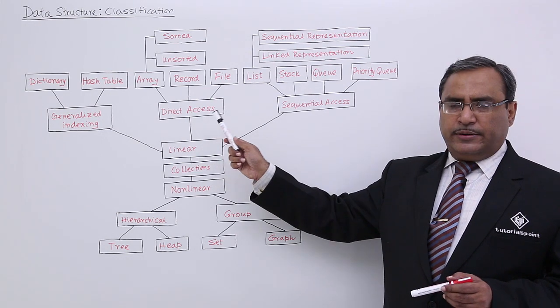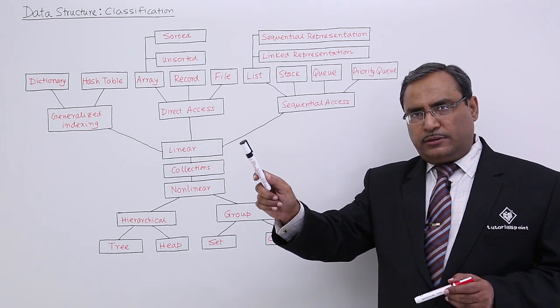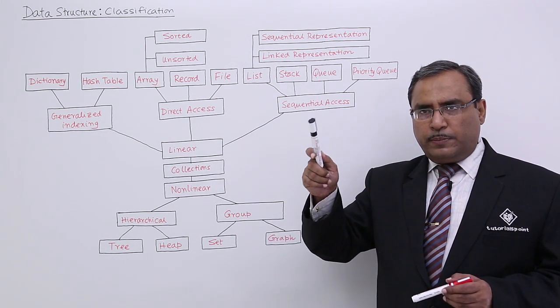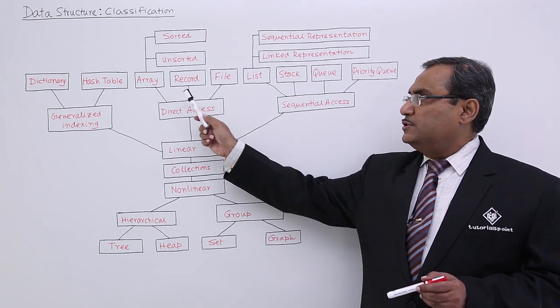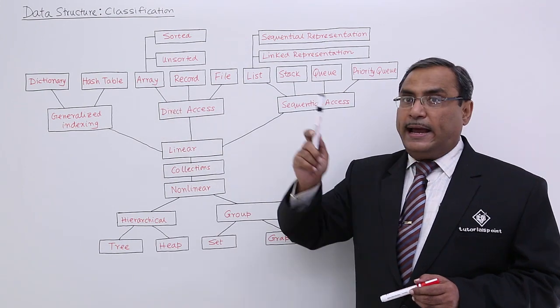In case of direct access, you can directly access a certain location. You need not go sequentially one by one. That means that sort of data structure will be of the type array.